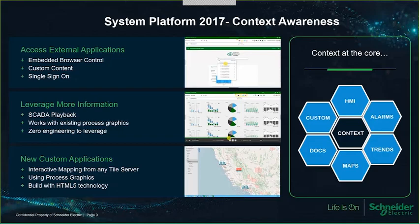When we say context, customers recognize that real-time data alone is not always sufficient to make a decision — data comes from a variety of systems. Our customers commonly report having between 15 and 20 pieces of software in their operation — things like HMI, alarming, trends, maps, documents, asset management, quality samples — but today they're very islanded. At the core, what we're doing with Operations Management Interface is making that a holistic capability brought together, including access to external applications through an embedded browser control.